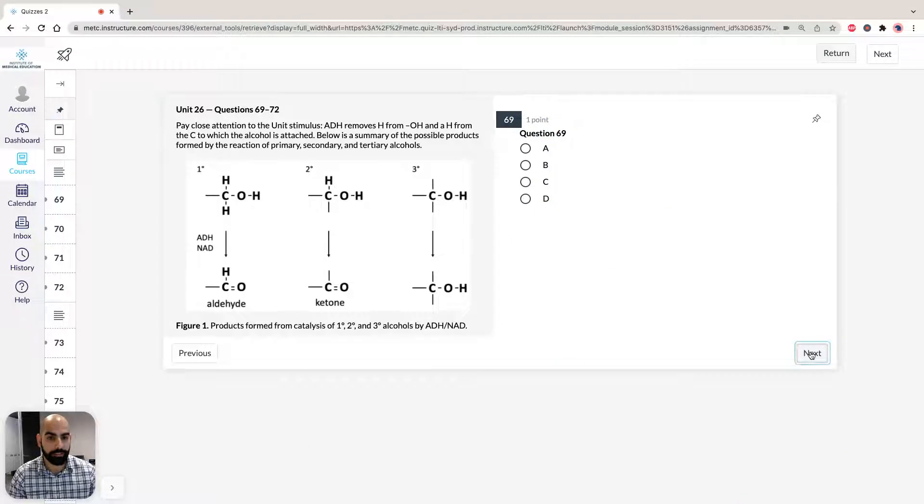If we go over to question 70 now, it asks the reaction of 2-pentanol catalyzed by ADH in the presence of NAD would produce. Let's draw it, 2-pentanol. This is obviously a secondary alcohol, so we know we're going to form a ketone.